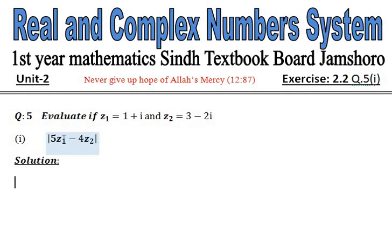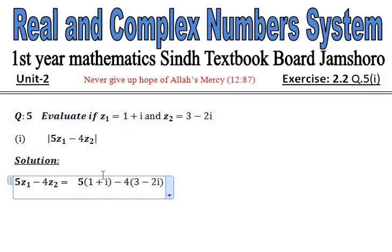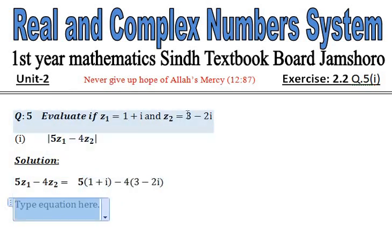We have to multiply 5 with z1 and minus 4 with z2. Here you can see z1 is equal to 1 plus i and z2 is equal to 3 minus 2i. So now simplifying, you can see here 5 into z1, so 1 plus i, similarly minus 4 into z2, 3 minus 2i.